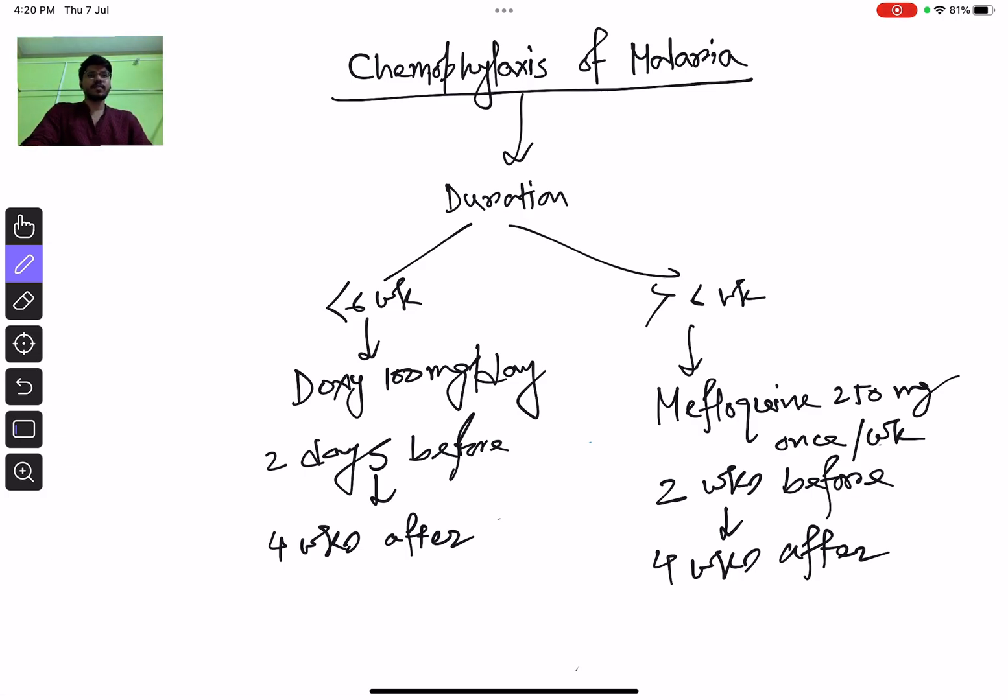So, chemo-prophylaxis of malaria depends upon duration. If the duration is less than 6 weeks, then you have to take doxy 100 mg per day 2 days before the journey to 4 weeks after the journey. If the duration is more than 6 weeks, then you have to take mefloquin 250 mg once per week, 2 weeks before the journey to 4 weeks after the journey.